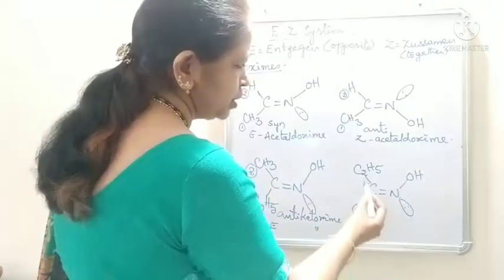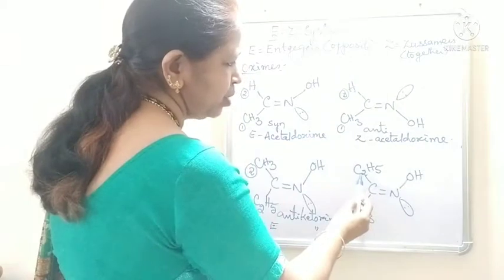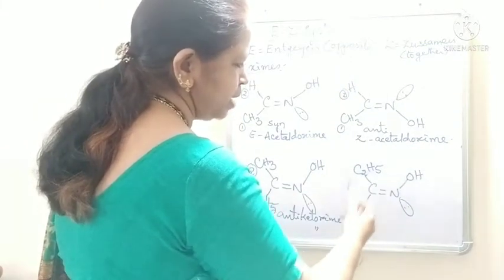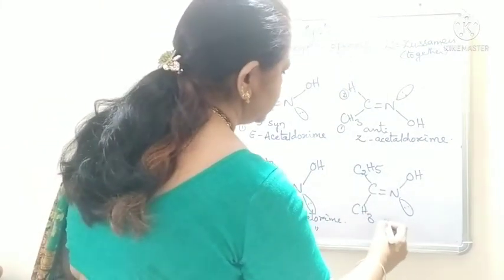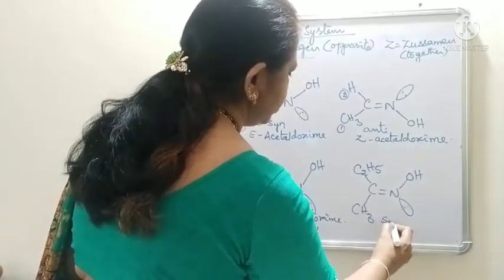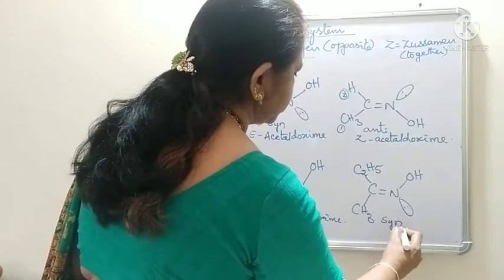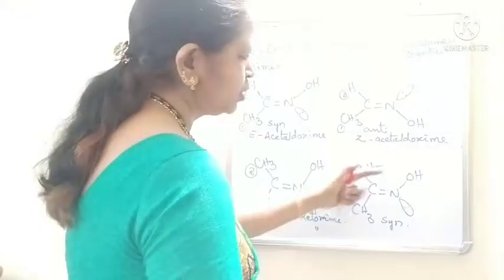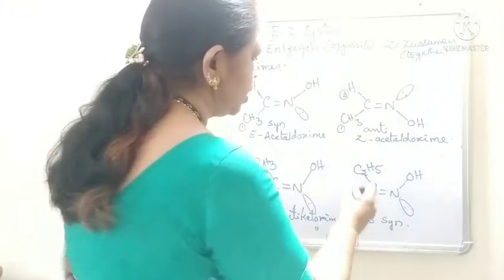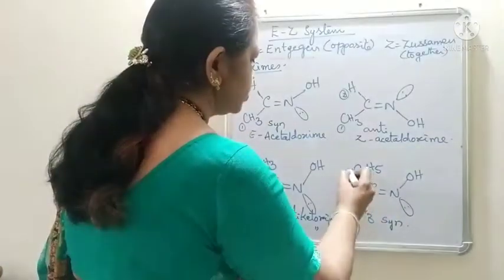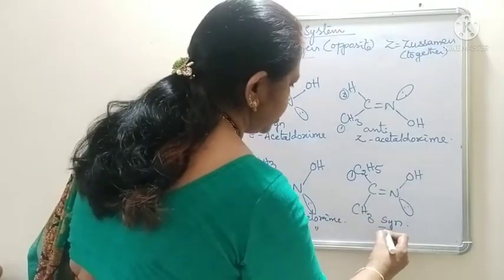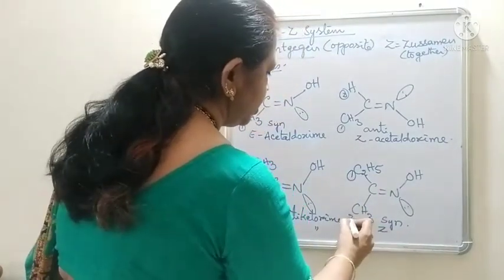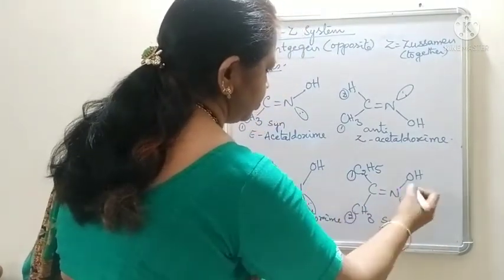And in its syn ketoxime, the first priority group and OH are lying on the same side. So it is a syn compound — syn ketoxime — and the first priority groups are on the same side. So it is Z. It is Z ketoxime.